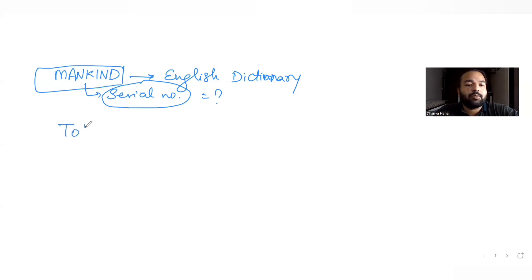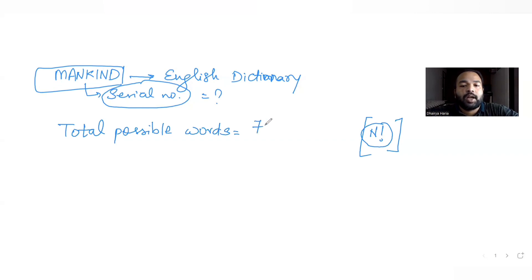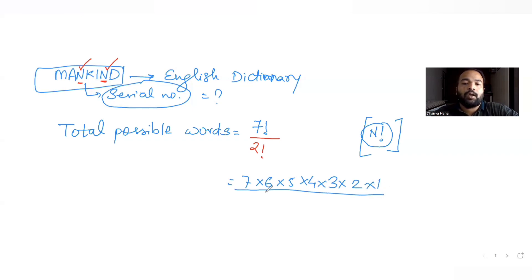There are seven letters in the word MANKIND. We know that n different things can be arranged in a straight line in n factorial ways. So seven letters can be arranged in 7! ways. However, the letter N repeats twice, so we divide by 2!. That gives us 7!/2! = 7×6×5×4×3×2×1 / 2 = 2520.